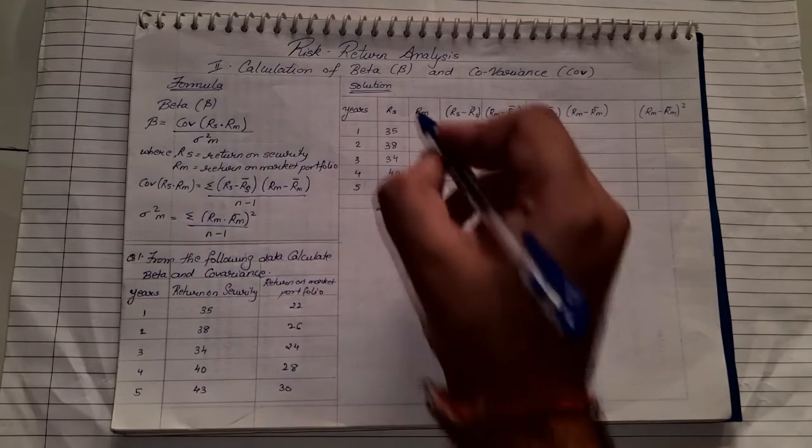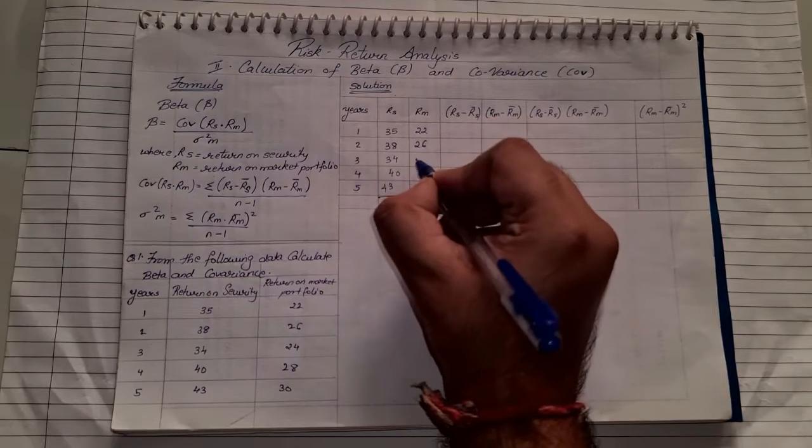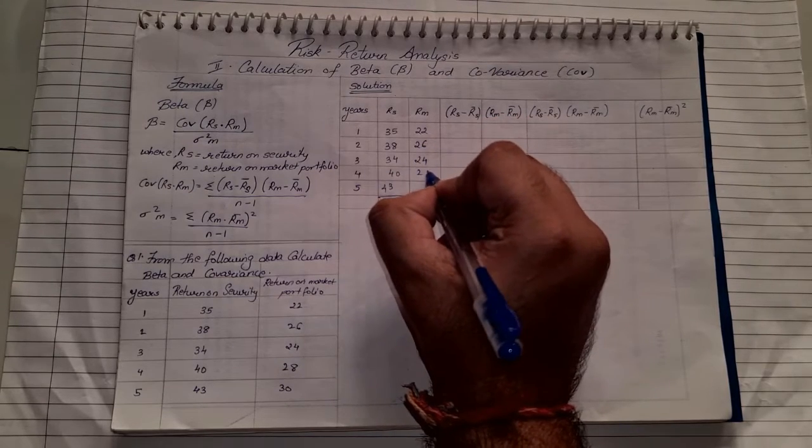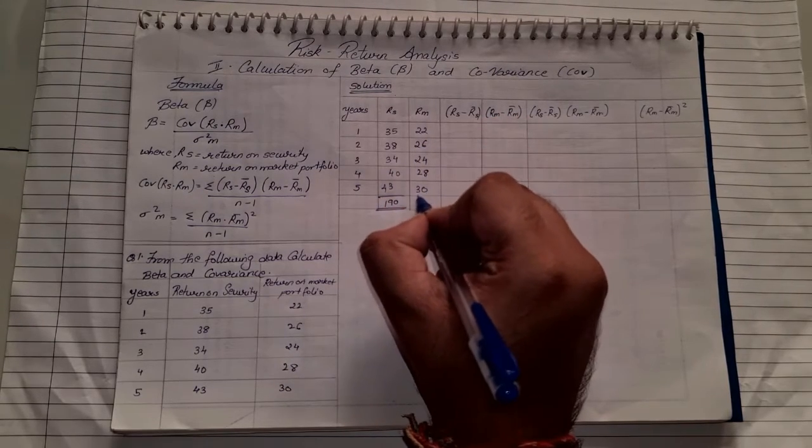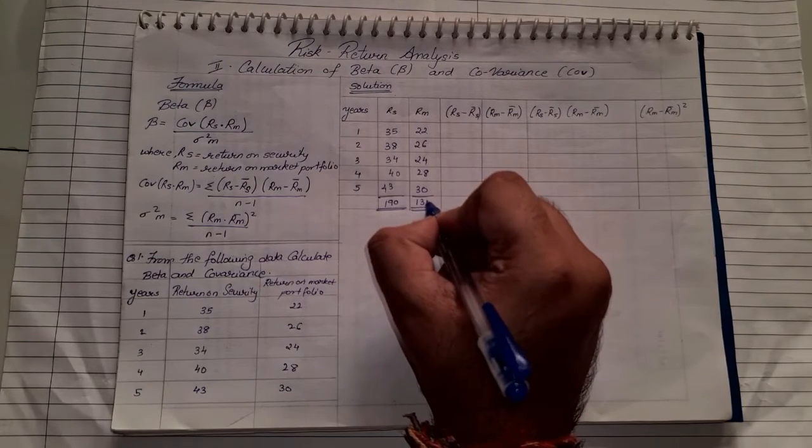Similarly, we will note down the market return or market portfolio return: 22, 26, 24, 28, and 30. Once we note down all the values, total it up. The total will come to 130.